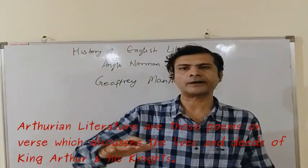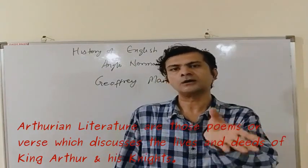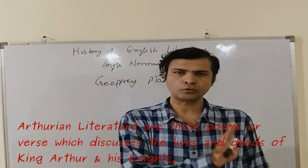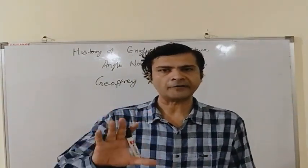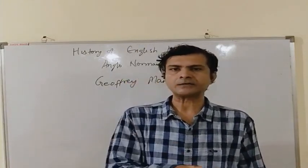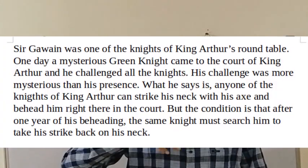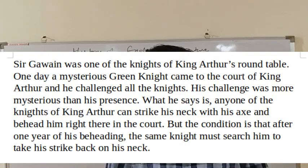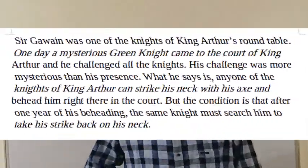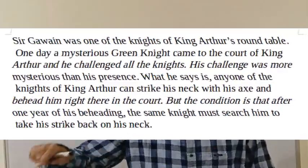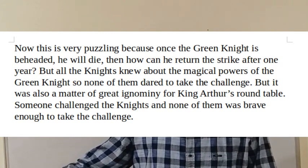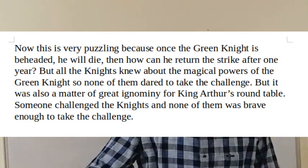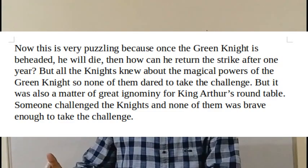All literature which discusses King Arthur and his knights is known as Arthurian literature. In Sir Gawain and the Green Knight we learn about a particular knight of King Arthur named Sir Gawain. King Arthur had very brave knights who sat around a round table. One day a mysterious man comes to their court and challenges all the knights, saying any of them can strike him on his neck with an axe and behead him — but the condition is that after one year, the beheaded Green Knight will return the strike. Since the Green Knight clearly had magical powers, everyone feared him and nobody was ready to accept the challenge.